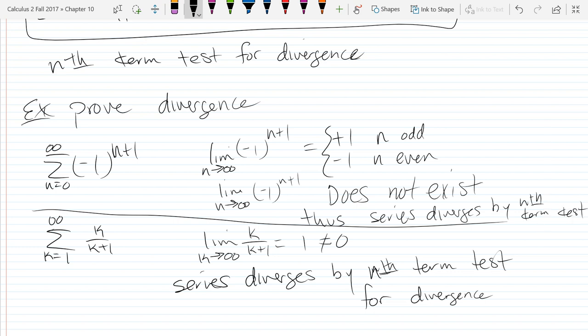So our first limit did not exist, so it doesn't equal zero. And our second limit was one, which also not zero.